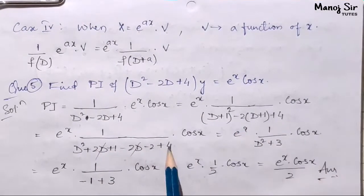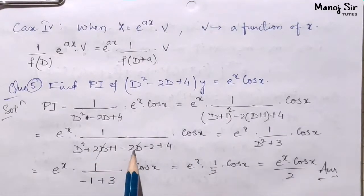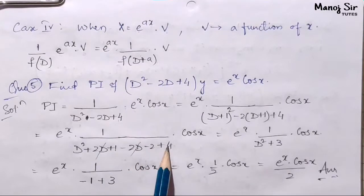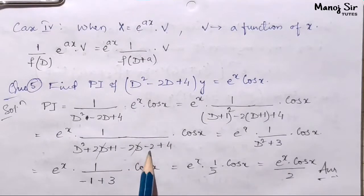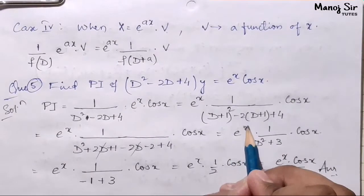The +2D and -2D cancel. We have 1 + 4 - 2 = 3. So we get e^x times 1/(D² + 3) cos x. For trigonometric form, we apply case 2.